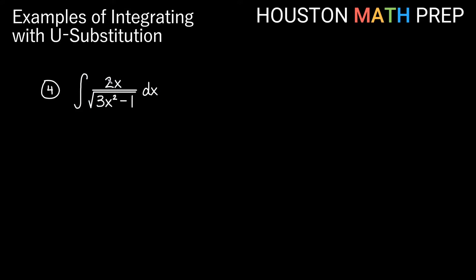Looking at the next one, we have the integral of 2x over the square root of 3x squared minus one dx. I notice I have a squared term and an x term, and the derivative of a squared term would give an x term. If I only choose part of the inside of the root to be u, I'd still have other terms requiring a chain rule. So I actually want to choose everything inside the root — that is, u equals 3x squared minus one.